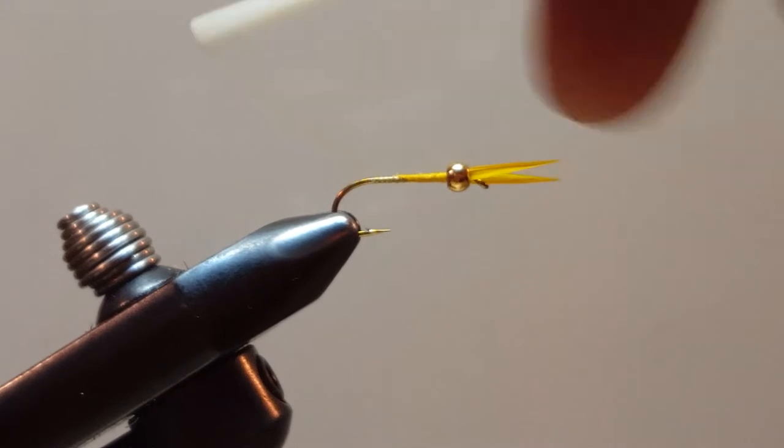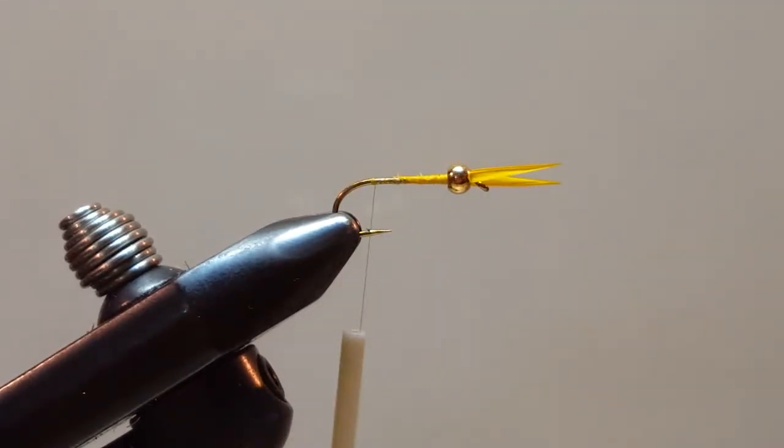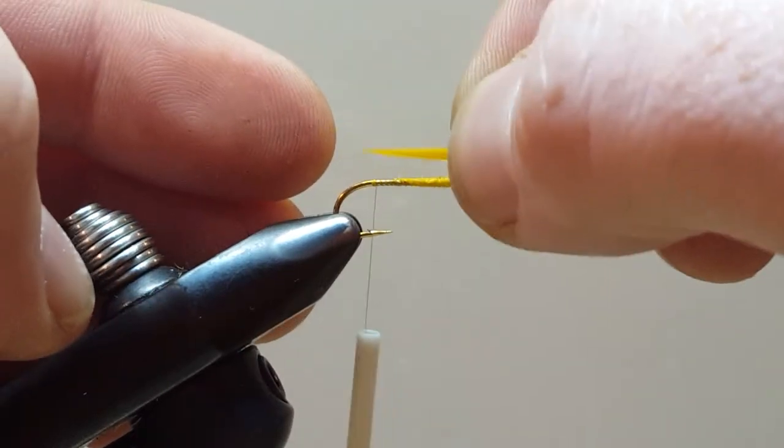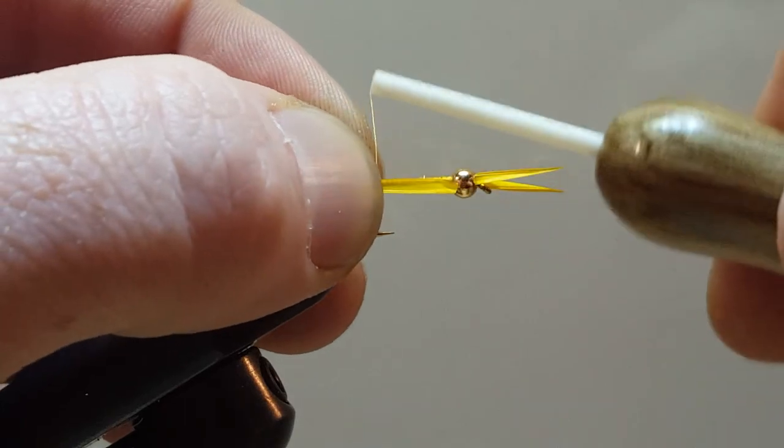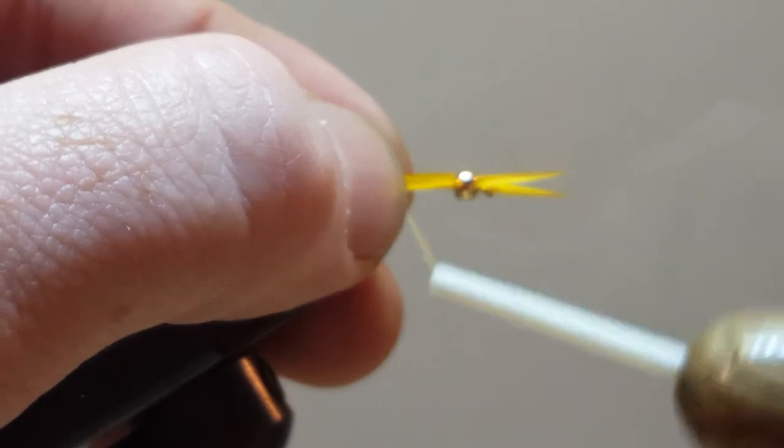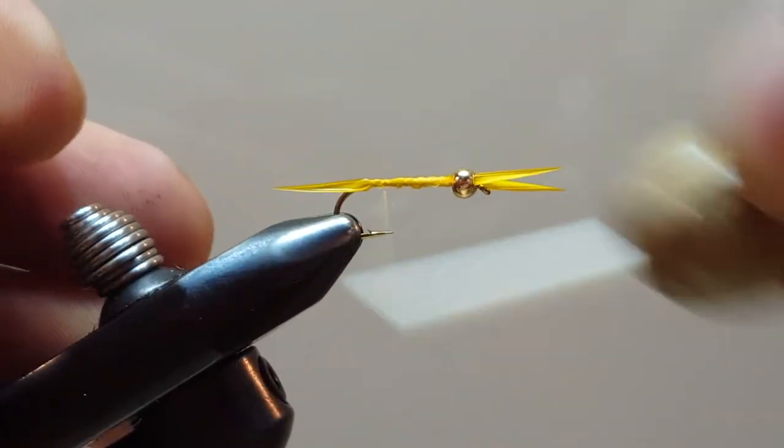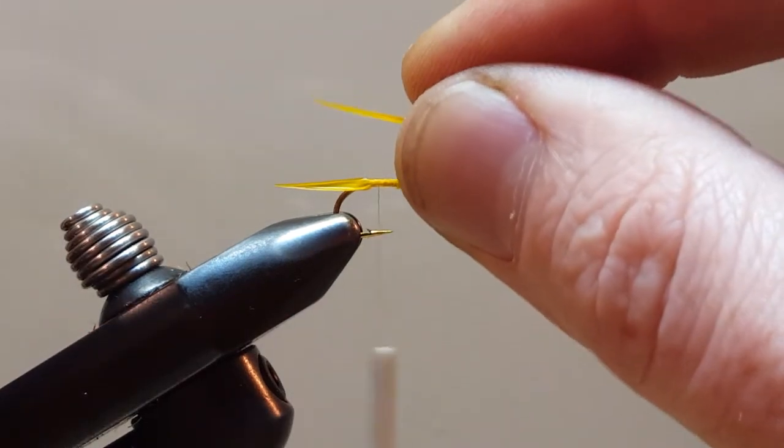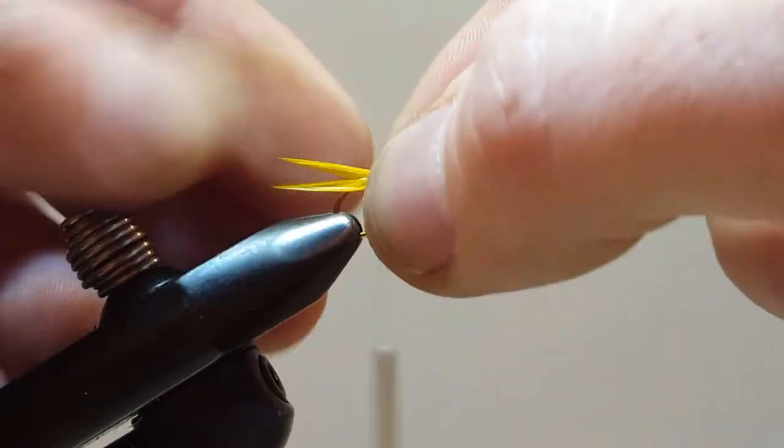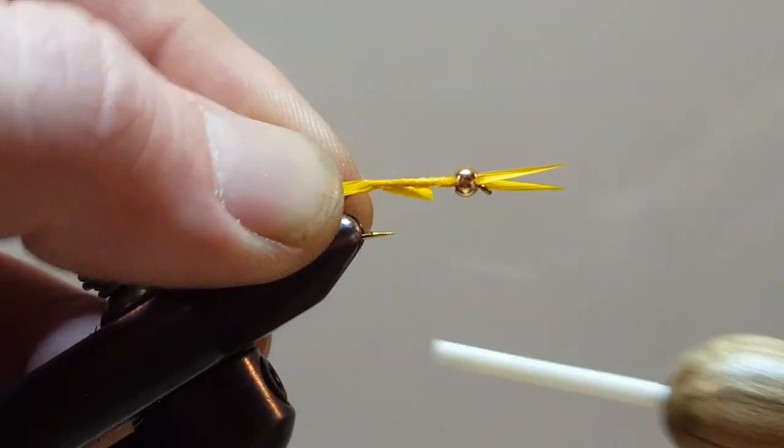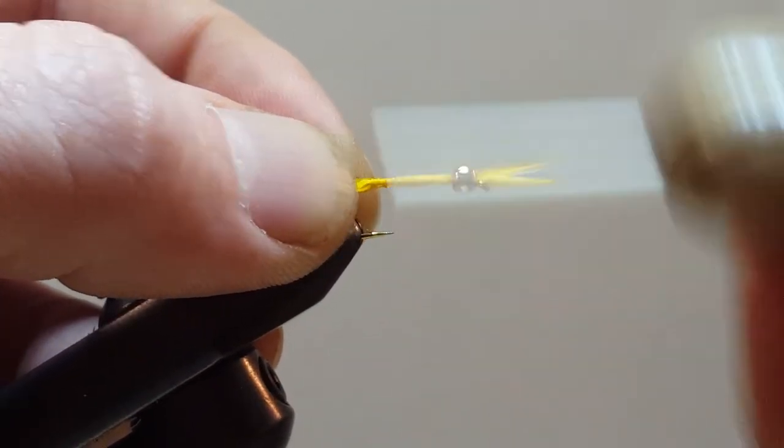Continue my wraps towards the bend, I'm going to tie in the rear biot. Once again, I'm going to isolate two quills. We're going to measure these out one hook's length. And we might as well just run that all the way forward. And we'll tie in the opposite side. Once again, these are curved out. Line up our tips and secure it down. Excellent.